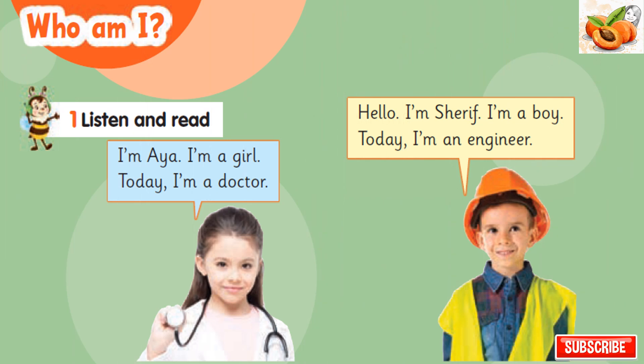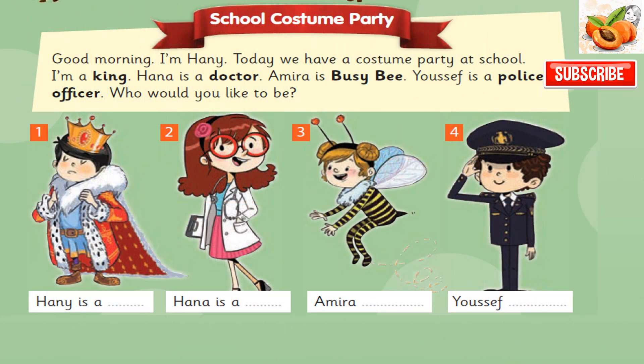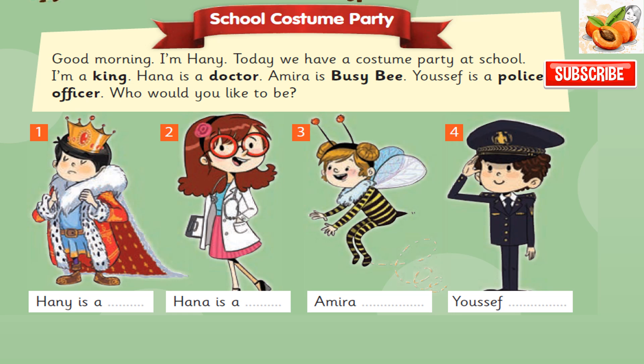Listen and read. I have a head. I'm Aya. I'm a girl. Today, I'm a doctor. Hello. I'm Sharif. I'm a boy. Today, I'm an engineer. Good morning. I'm Hany. Today, we have a costume party at school. I'm a king. Hannah is a doctor. Amira is a busy bee. Yusuf is a police officer. Who would you like to be?